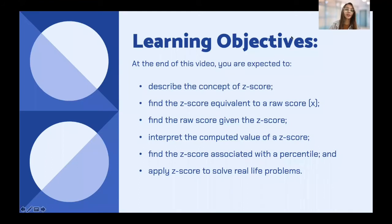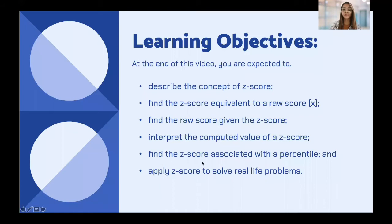Here are our learning objectives. At the end of this video, you are expected to: first, describe the concept of Z-score; second, find the Z-score equivalent to a raw score X; third, find the raw score given the Z-score; fourth, interpret the computed value of a Z-score; fifth, find the Z-score associated with a percentile; and sixth, apply Z-score to solve real-life problems.